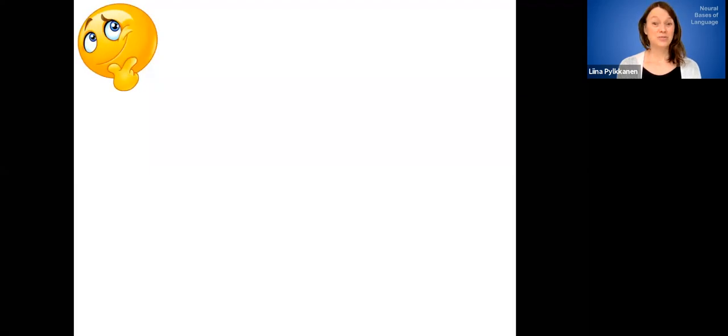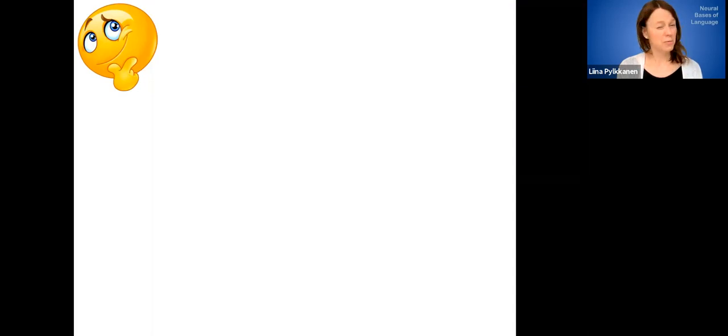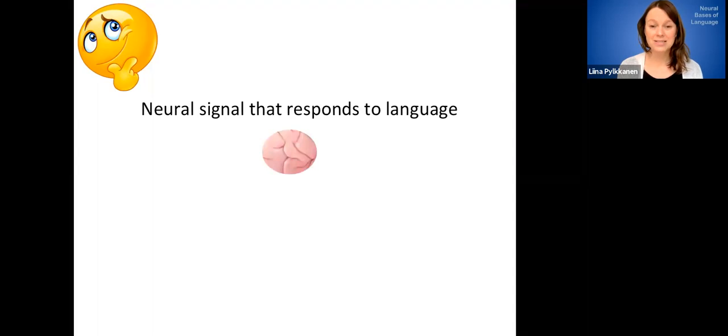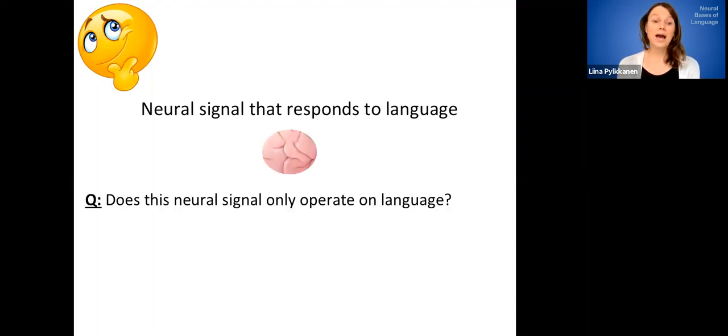So the question is actually a really difficult one. And before we kind of plunge ahead, I just want to ponder upon that question a little bit. So let's just assume that we're interested in some neural signal that responds to language. And so the question we want to ask is whether this neural signal only operates on language? That's the domain specificity question.